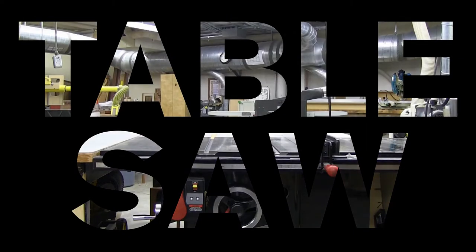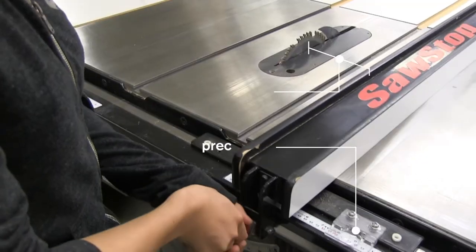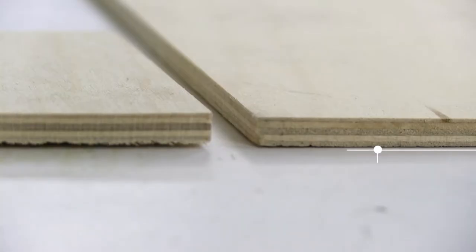The table saw is one of the most important tools in any woodworking shop. It is designed to make precise cuts that are straight with smooth finishes.